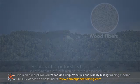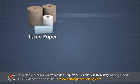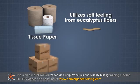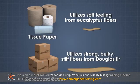For example, tissue paper utilizes the soft feeling from thin, flexible eucalyptus fibers, while cardboard boxes are made of strong, bulky, stiff fibers like Douglas fir.